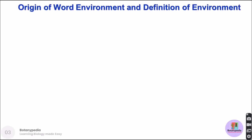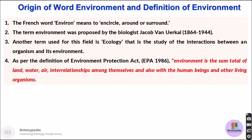The word environment originates from the French word 'environ,' which means to encircle, surround, or be around. The term environment was proposed by biologist Jacob van Urkel. Another term used for this field of study is ecology — the study of interactions between an organism and its environment. As per the Environment Protection Act (EPA) 1986, environment is defined as the sum total of land, water, air, and their interrelationships among themselves and with human beings and other living organisms.